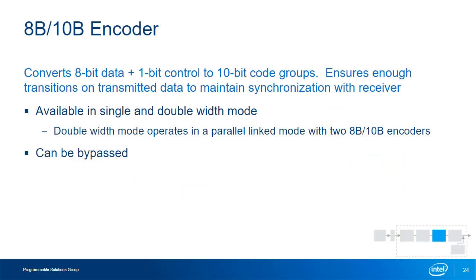The 8B-10B encoder is enabled for protocols like Fibre Channel, PCI Express, and 1 Gb Ethernet. It takes 8-bit parallel data and a 1-bit control code and converts it to 10-bit code groups chosen to ensure enough transitions on the serial stream to maintain synchronization with the receiver, allowing clock extraction from the transmitted data. This encoding adds 25% overhead per character but maintains neutral running disparity — an equal number of zeros and ones — and contains special encoded characters or control codes used for line synchronization, indicating the start and end of packets and idle states between packets.